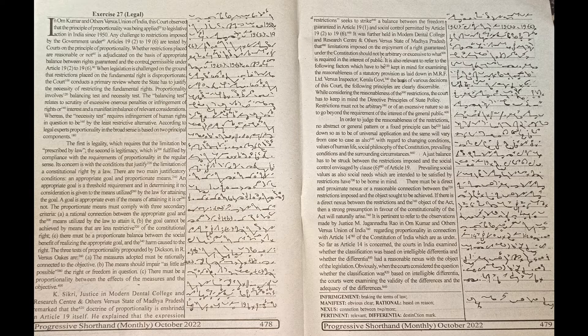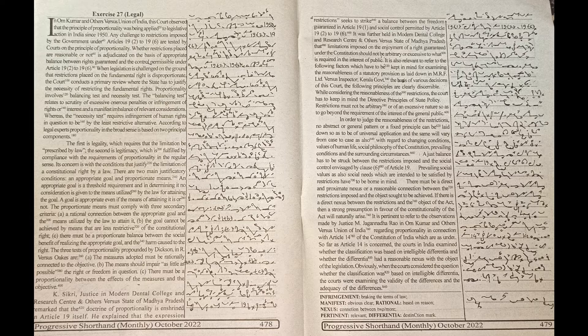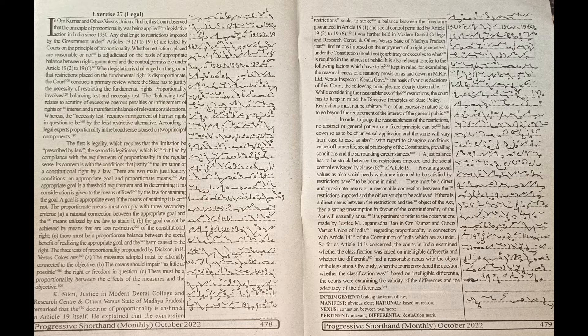Its concern is with the conditions that justify the limitation of a constitutional right by a law. There are two main justificatory conditions: an appropriate goal and proportionate means. An appropriate goal is a threshold requirement and in determining it, no consideration is given to the means utilized by the law for attaining the goal. A goal is appropriate even if the means of attaining it is or not.